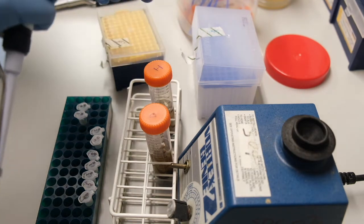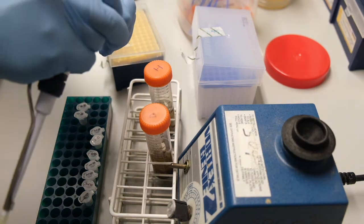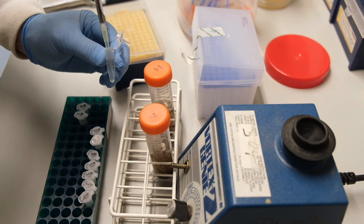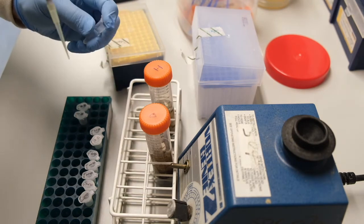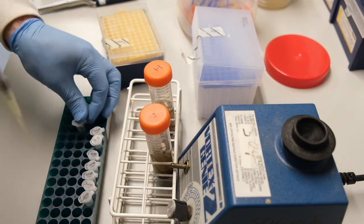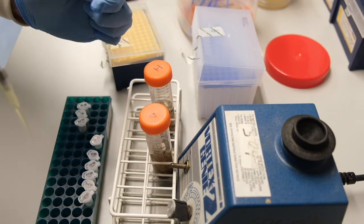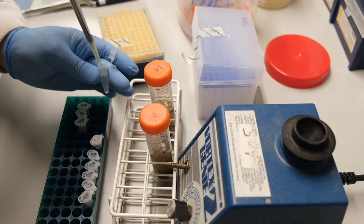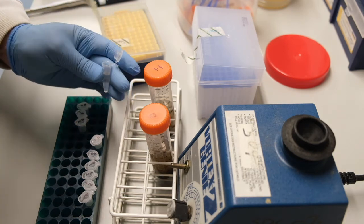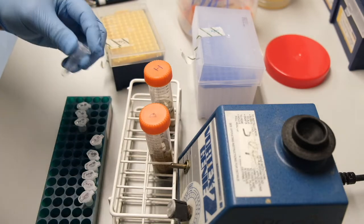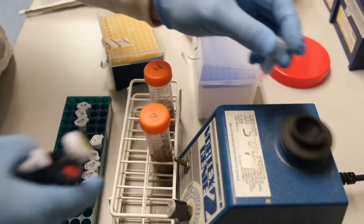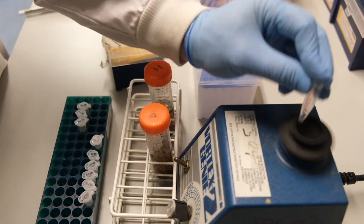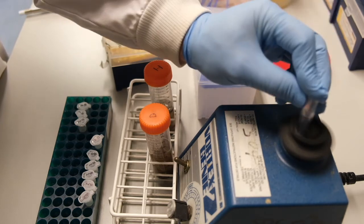Make sure you use a fresh yellow tip for each transfer. We pipette 100 microliters from the 10 to the minus 2 dilution into 900 microliters of ringer solution to make the 10 to the minus 3 dilution. Mixing thoroughly, we repeat to make the 10 to the minus 4 dilution.